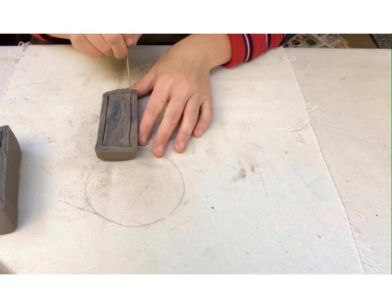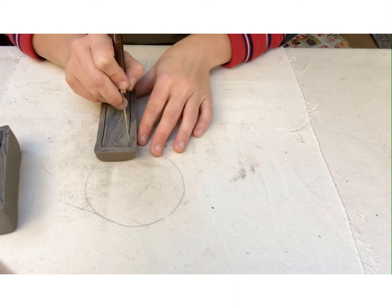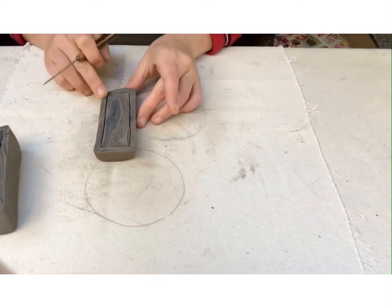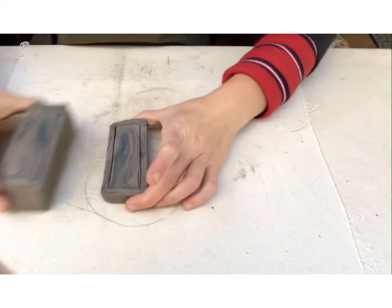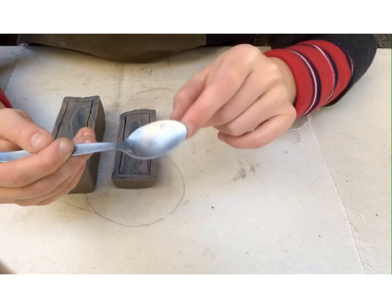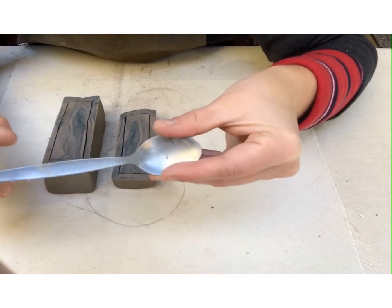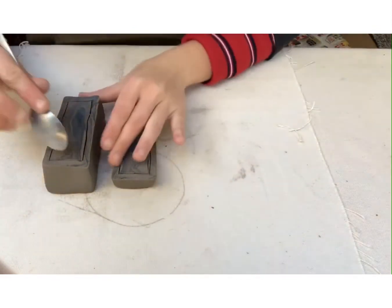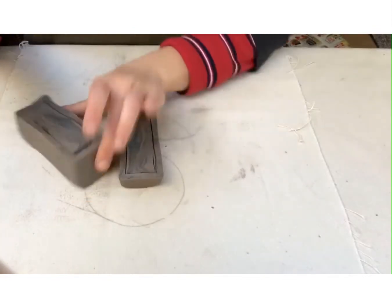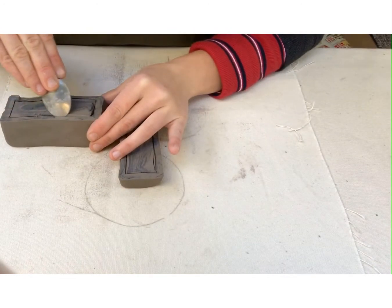Same for the lid, so that the lid and the box have even wall thickness. Right, there we go. Now I can use my spoon. We're going to use it for bigger sections and smaller sections.